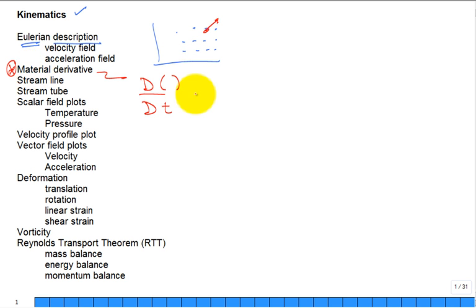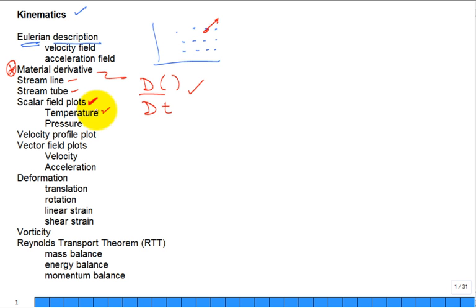The material derivative links together F = ma — a kind of Lagrangian description — where you apply principles to chunks of fluid as they flow through the flow field. But you describe it in an Eulerian, grid-based way. You talk about material acceleration at a grid location, not by tracking individual fluid mass chunks. There are also streamlines and stream tubes, and scalar fields like the temperature field, often visualized by lines of constant temperature called isotherms.